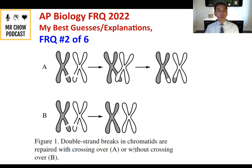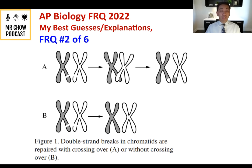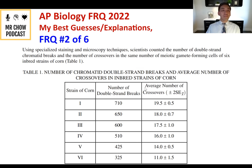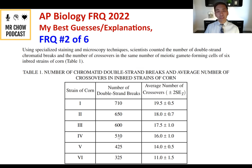Background knowledge: meiosis produces four haploid gamete cells through two cell divisions, producing genetically diverse products. Three ways to increase genetic diversity are crossing over, independent assortment, and random fertilization. Figure 1A shows crossing over; figure 1B shows no crossing over. Scientists counted double strand breaks and crossovers in the same number of meiotic cells from six inbred corn strains. Looking at the data: there's a direct correlation between double strand breaks and average number of crossovers.